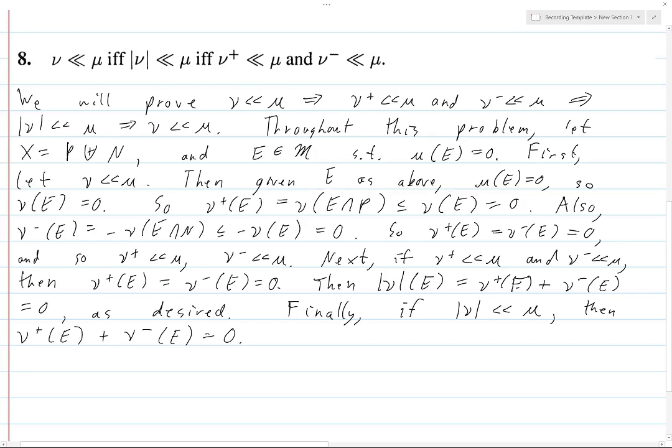So, ν⁺ E equals ν⁻ E is equal to zero and so, ν of E which is just ν⁺ of E minus ν⁻ E is zero minus zero which I'm pretty sure is zero. Hence, ν with respect to ν.